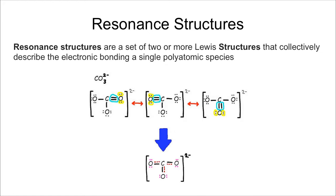So how do you know where to put it? Well, the answer is you have to put it in all three locations. So what you do is you draw the ion three different ways — with the double bond on the right, on the left, and then on the bottom — and you connect them with these little double-sided arrows.